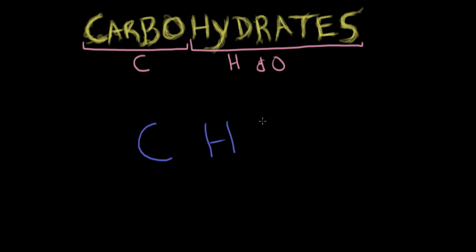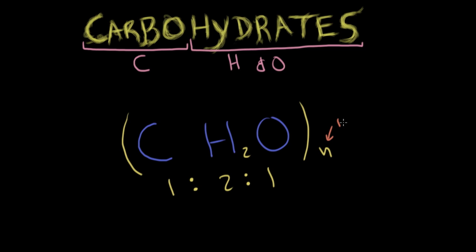This formula says that for every carbon there will be two hydrogens and one oxygen. So if we talk about a hexose — a simple sugar, a monomer that contains six carbon atoms — inputting six carbons, you will have twelve hydrogens (six times two) and of course six oxygen atoms.